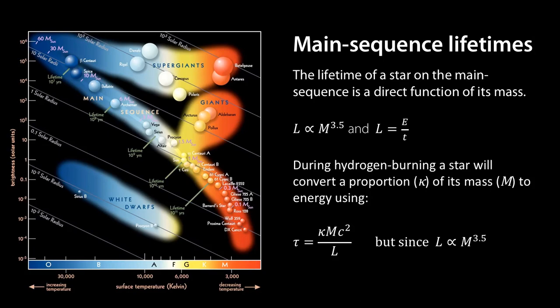But, as we've just said, luminosity is proportional to M to the 3.5. So just talking about proportionality, tau is proportional to M, but it's inversely proportional to M to the 3.5, or tau is proportional to M to the negative 2.5. The greater the mass, the less the lifetime.